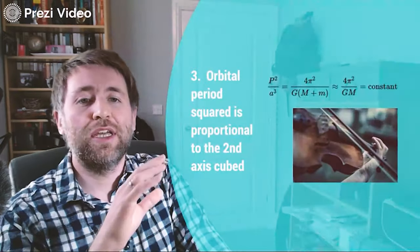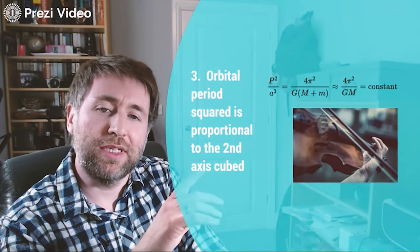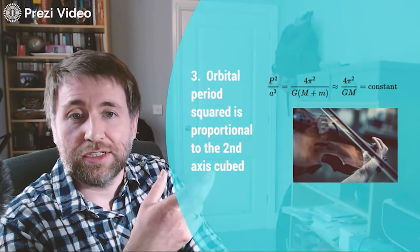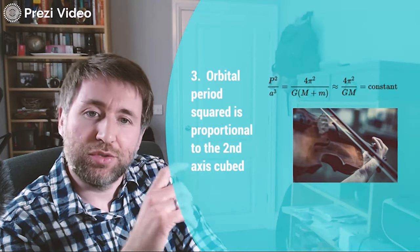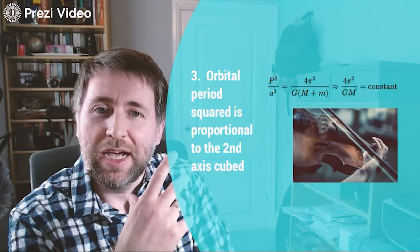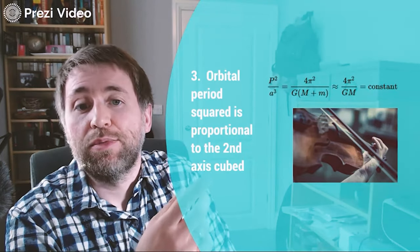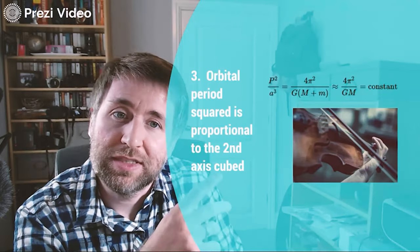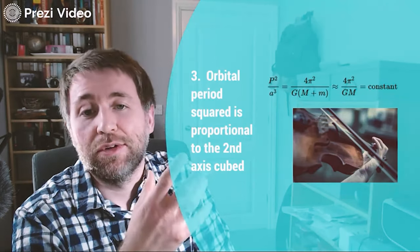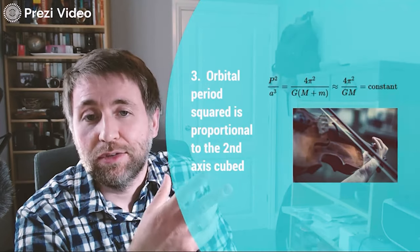And lastly this is about the period and its relationship between the size of the ellipse essentially. So the second axis is the shorter axis of an ellipse, and the orbital period squared is proportional to the second axis cubed. So that's in that maths up there. And these are real, this is real maths that you need to apply in your A-level.